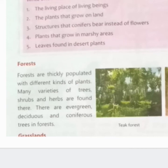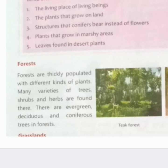Forest — forest means jungle. Forests are thickly populated with different kinds of plants. Many varieties of trees, shrubs, and herbs are found there — yehaan anek prakar ke paedhon, paudhon, jadiyaan aur jadi bhutiyan milti hain. There are evergreen, deciduous, and coniferous trees in forests — vano mein saada bahar, pattijhadi, aur sankuwadhari paedhon hote hain.